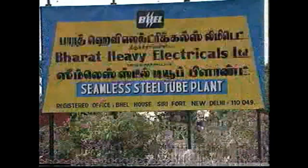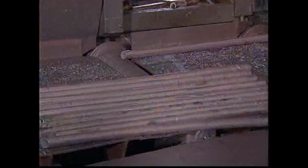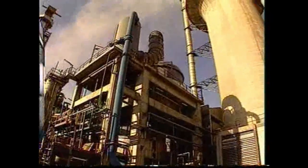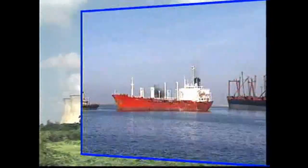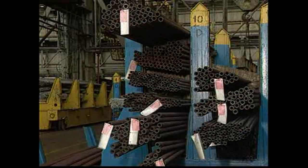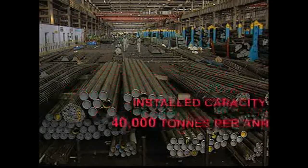Though primarily conceived as a captive plant of its boiler manufacturing unit, BHEL seamless steel tube plant has widened its market to cater to various industrial needs like auto industry, petrochemicals, fertilizers, paper, refineries, power stations and marine boilers. The BHEL SSTP has an installed capacity of 40,000 tons per annum.